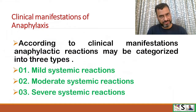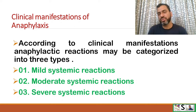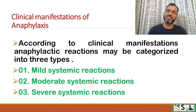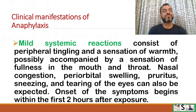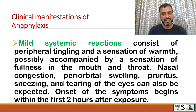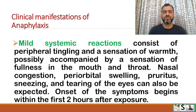What are the clinical manifestations of anaphylaxis? Anaphylactic reactions may be categorized into three groups: mild, moderate, and severe systemic reactions. Mild systemic reactions consist of peripheral tingling, a sensation of warmth, possibly accompanied by a sensation of fullness in the mouth and throat, nasal congestion, periorbital swelling, pruritus, sneezing, and tearing of the eyes. Onset of these symptoms begins within the first two hours of exposure.